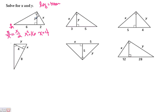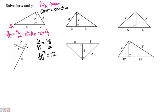Y is an altitude, so altitude means Over, Up, Down, Over. I go over 6, up Y, down Y, and over 2. The altitude is the geometric mean of the two segments. So Y squared equals 12. Take the square root of both sides, and remember we always simplify our radicals. Y equals 2 radical 3.